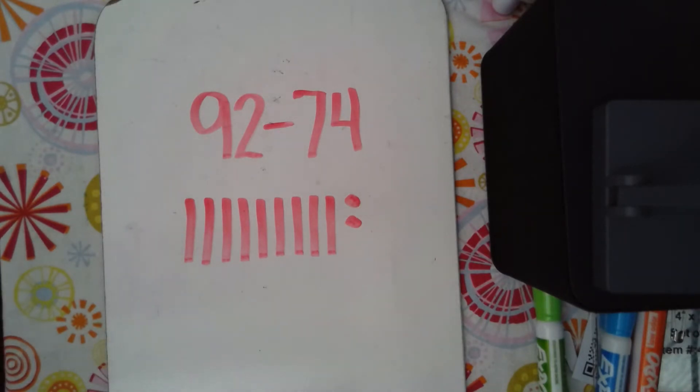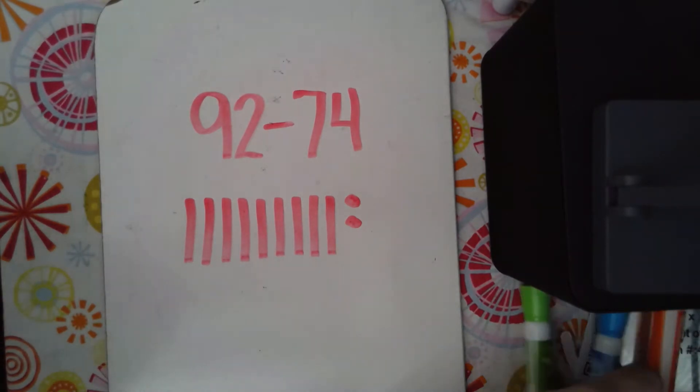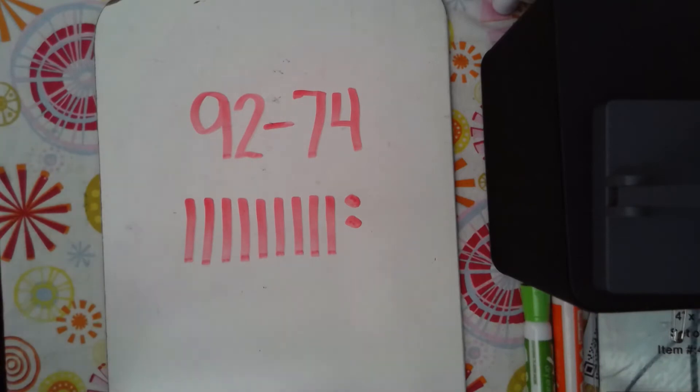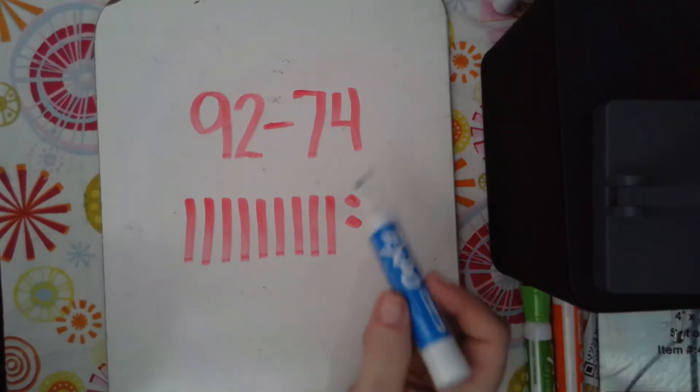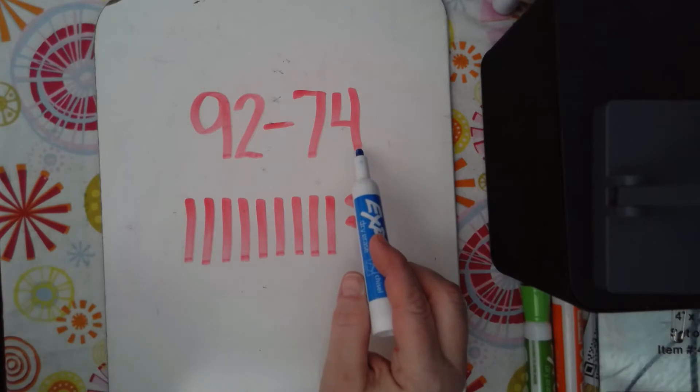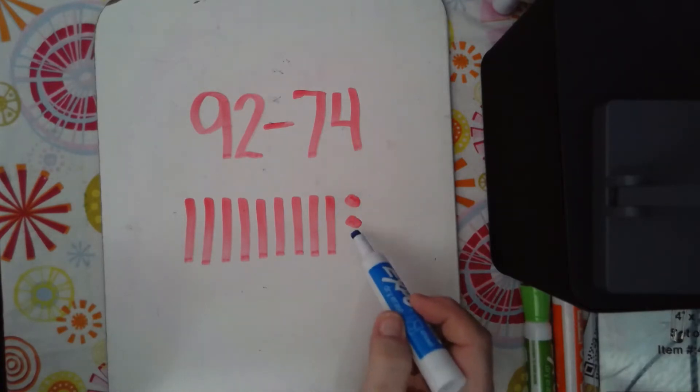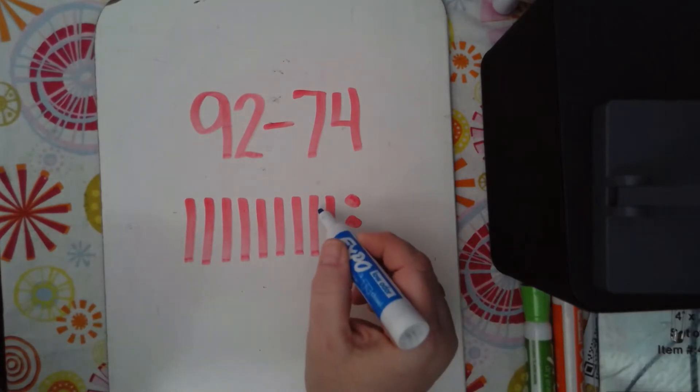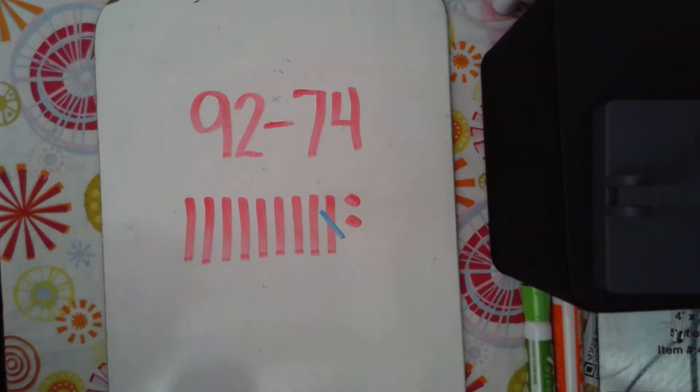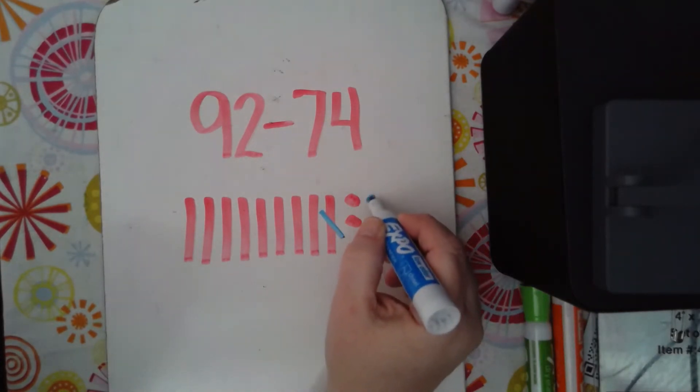Now I want to subtract or take away 74. I'm going to switch colors here. Now the first thing that I notice is that I'm going to be taking away 74 which has 4 ones but I only have 2 ones. So what do I need to do? I need to regroup. So I'm going to take one of these tens away and I'm going to split it apart into 10 ones.